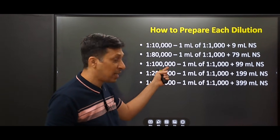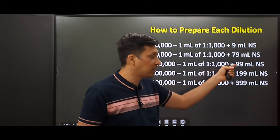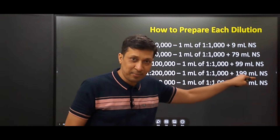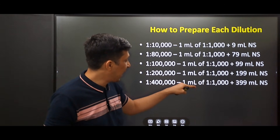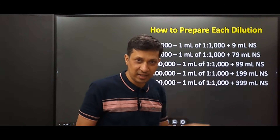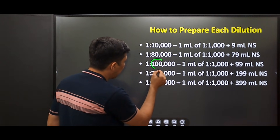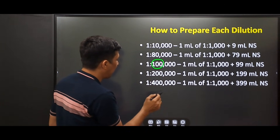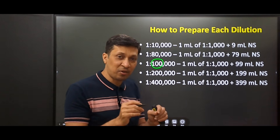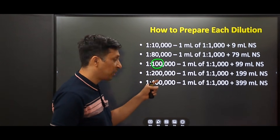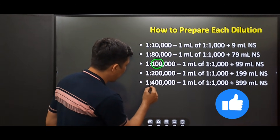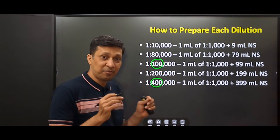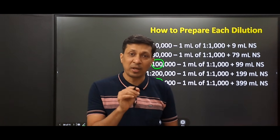One in one lakh is prepared by adding one ml of one in one thousand to 99 ml of normal saline. Similarly, one in two lakh is prepared by adding one ml to 199 ml of normal saline, and one in four lakh by adding one ml to 399 ml of normal saline. Whatever the number is before the lakh, that much total volume of solution you have to prepare. So for one in one lakh, you add one ml to 99 ml to make 100 ml total.